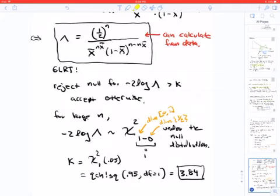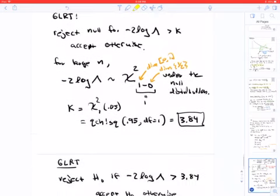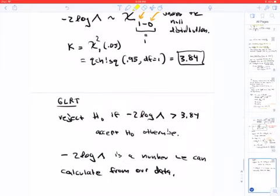And this is something that you can calculate from your data. You take minus two log of that, and we know that this is for large n. This is going to be a chi-squared. So the interval zero to one has dimension one, and just a single point half has dimension zero. So this is also chi-squared one. And so the cutoff is going to be three point eight four. So as long as the pollster has a large enough sample, we'll reject the null if minus two log lambda, which is something that you can calculate from your data, is greater than three point eight four.